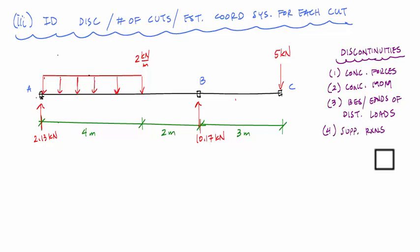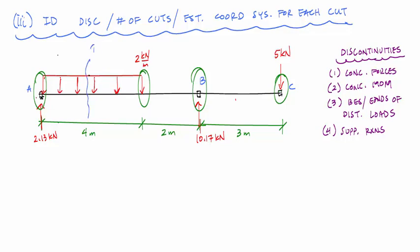Identifying discontinuities: A is a discontinuity because of the support reaction and the beginning of the distributed load; the end of the distributed load; point B for the support reaction; and point C for the concentrated force. That gives four discontinuities, which means I need three cuts — cut one, cut two, and cut three.